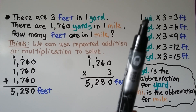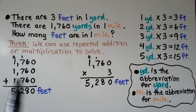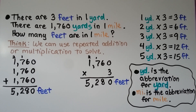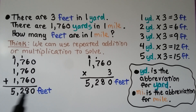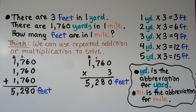We could make a table: one yard is three feet, two yards is six feet, three yards is nine feet, and so on up to 1,760, but that would take forever. We can just use repeated addition — adding three times — because there are three feet in one yard to find how many feet are in a mile. 'yd.' is the abbreviation for yard and 'mi.' is the abbreviation for mile.